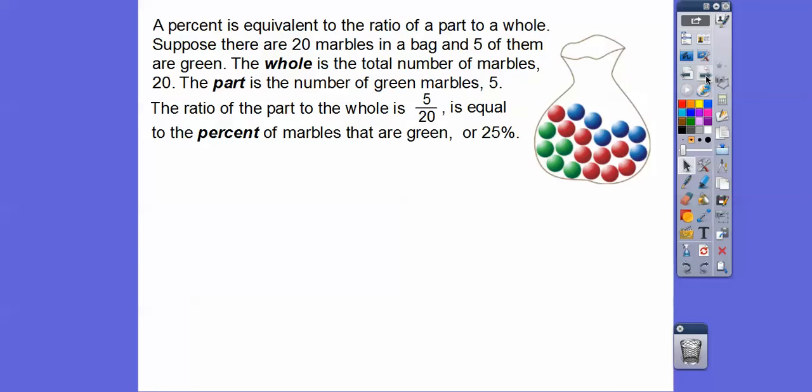The ratio of the part to the whole is 5 over 20 and it's equal to the percent of marbles that are green, or 25 percent. So how do we get 25 percent? Well, remember, part to a whole in this case is 5 to 20. And remember, percent is per 100.